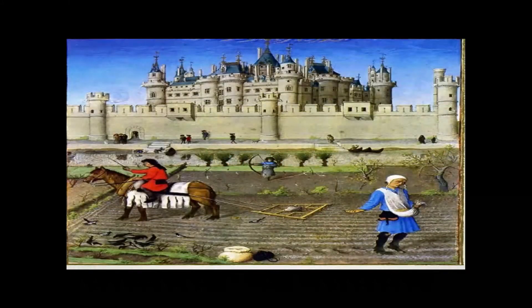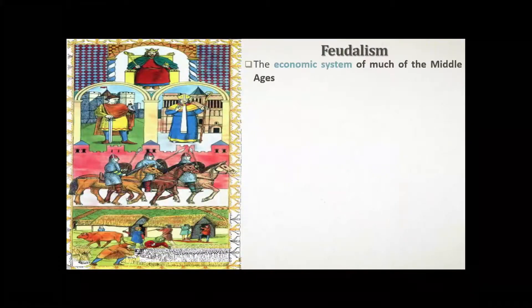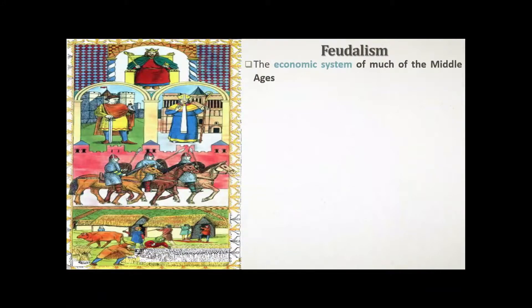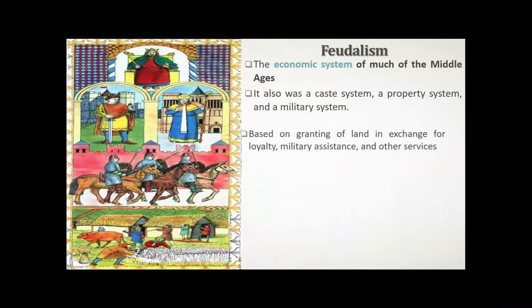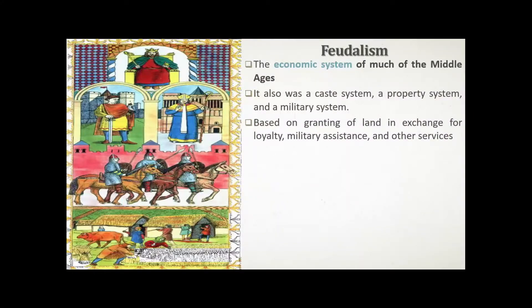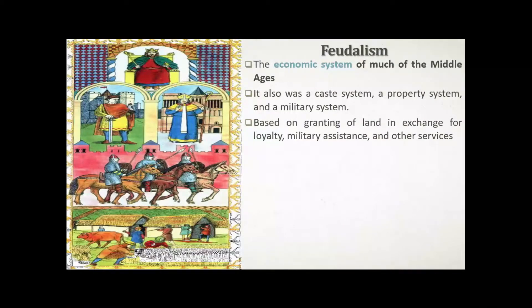Feudalism — illustrated here with a medieval feudal castle — was the economic system of much of the Middle Ages. It was also a caste system, a property system, and a military system. It was based on the granting of land in exchange for loyalty, military assistance, and other services.